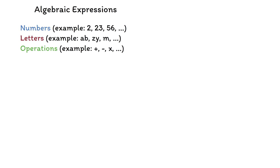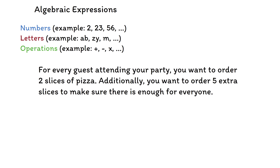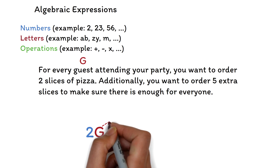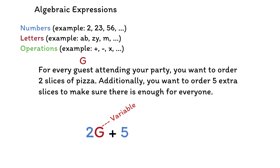Imagine you are ordering pizzas for a party. For every guest attending your party, you want to order two slices of pizza. Additionally, you want to order five extra slices to make sure there is enough for everyone. To find out the total number of pizza slices you need to order, you will use the expression 2g plus 5, where g is the number of guests. In algebra, the g is what is known as the variable.